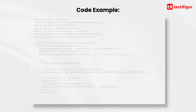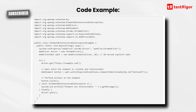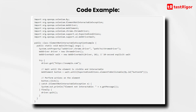Code example. The code sample demonstrates handling element not interactable exception in a Selenium Java test. It imports required classes, initializes WebDriver and WebDriverWait, and uses a try-catch block to navigate to a web page, wait for an element to become visible and interactable, and perform actions on the element. If element not interactable exception is thrown, the error message is printed, and the browser and WebDriver session are terminated in the finally block.